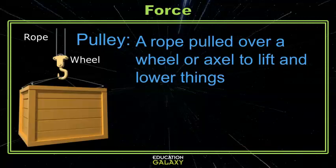Another example of a simple machine is a pulley. This is where you have a wheel and an axle with a rope going around it. This simple machine helps you lift things that are heavy straight up or lower them down.